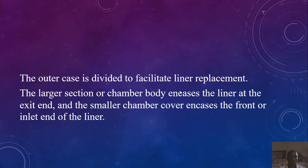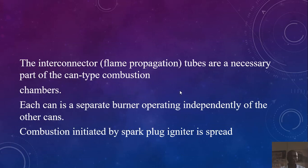The outer case is divided to facilitate liner replacement. The larger section or chamber body encases the liner at the exit end, and the smaller chamber cover encases the front or inlet end of the liner. The interconnector flame propagation tubes are an integral part of the can type combustion chambers.